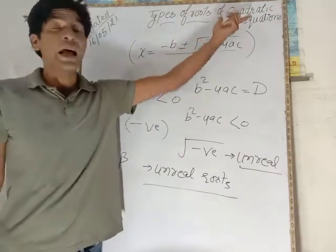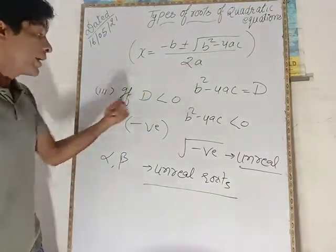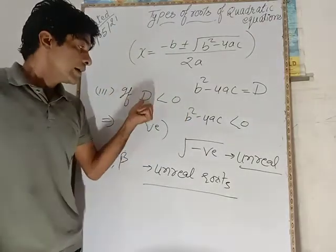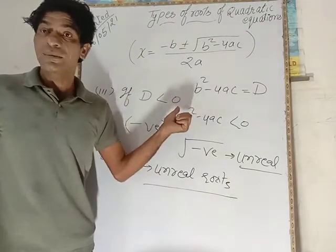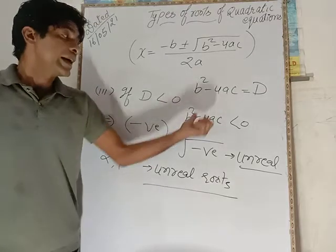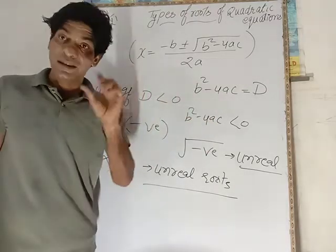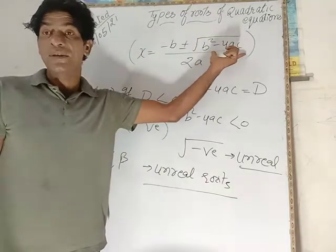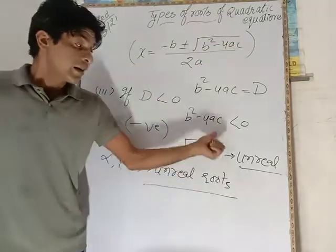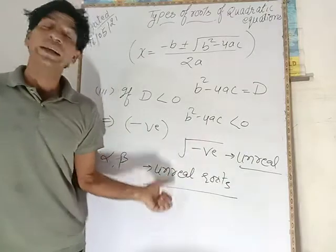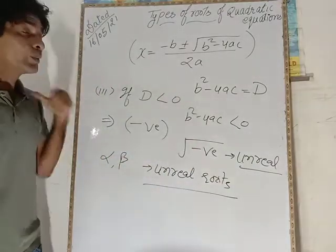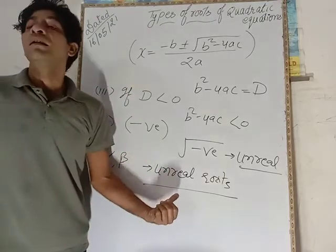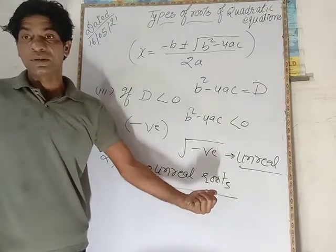Then the system will have equal roots. Third one, when discriminant is less than zero, it means discriminant is having negative value. And square root of any negative value is always unreal and mathematically irrelevant. Then both values of x in quadratic equation, means alpha and beta, will be unreal roots.